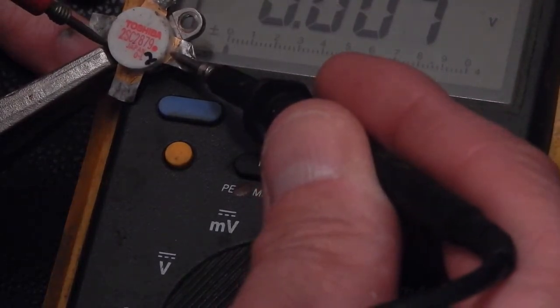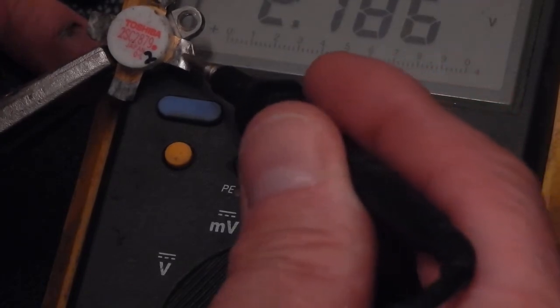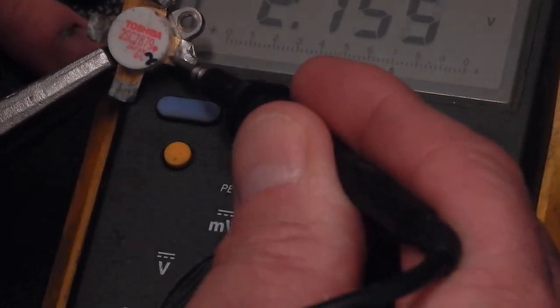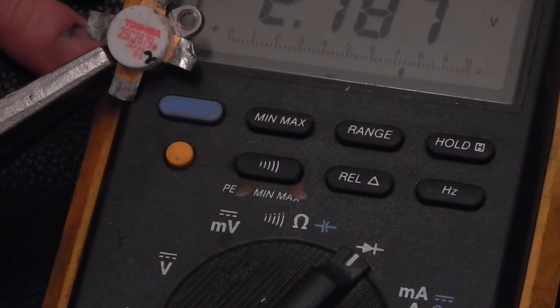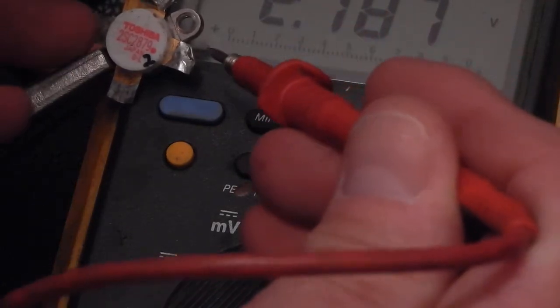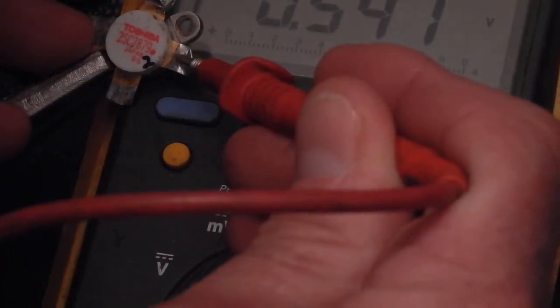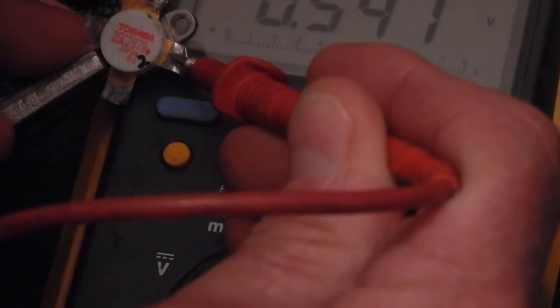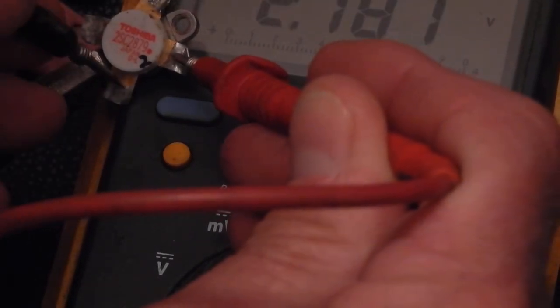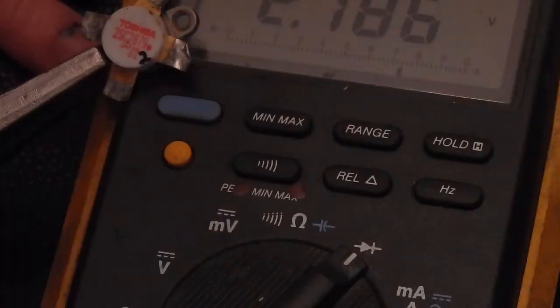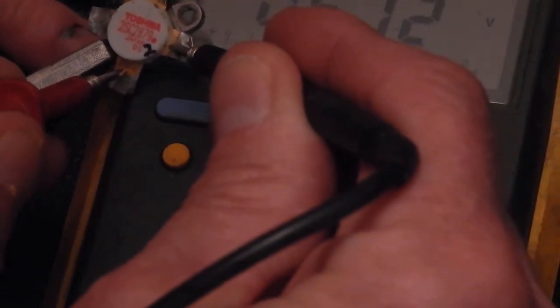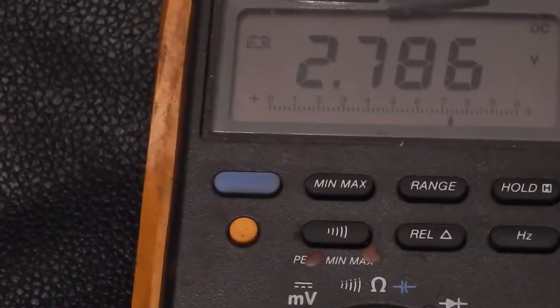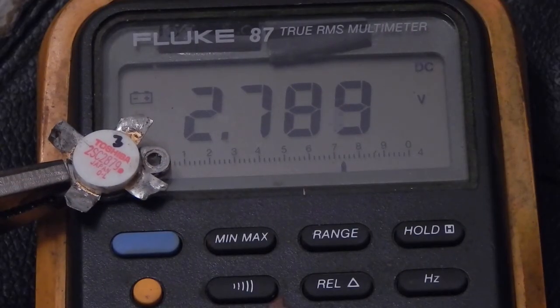We are shorted like we should be. Collector to emitter, open like we should be. Reverse collector to emitter, 0.541. Base to emitter, we're open like we should be. Reverse base to emitter, 0.572.